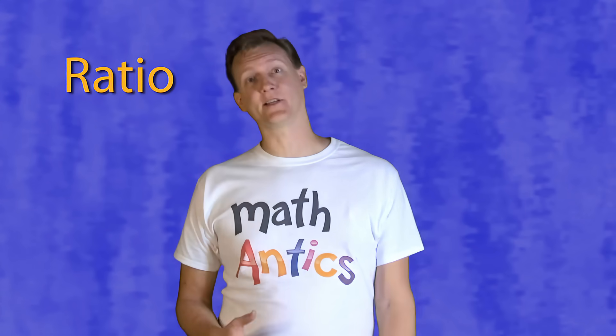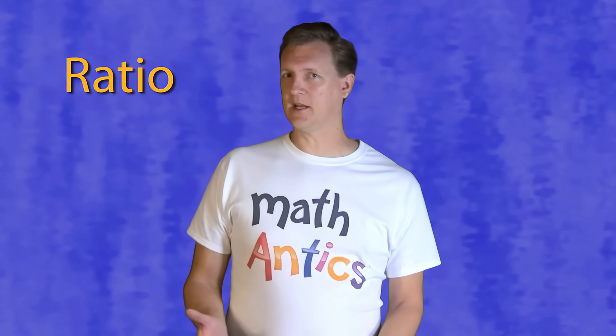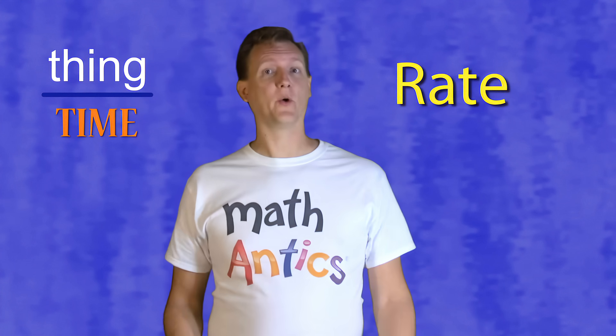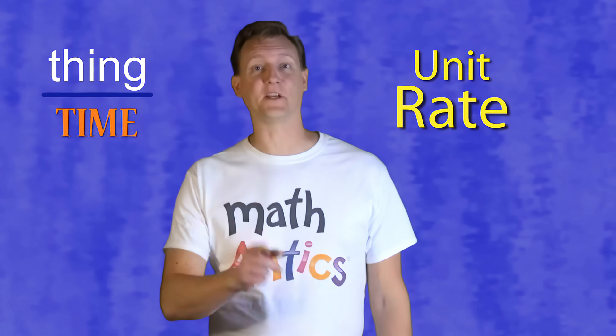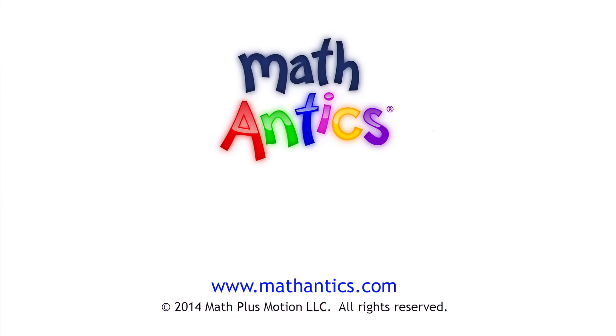That's it for this lesson. We've learned that a ratio is basically just like a fraction, but instead of showing what part of something you have, it shows the relationship between two different things. We also learned that when one of those two things is time, we call the ratio a rate. And last of all, we learned how to convert a rate into a unit rate for easy comparison. As always, thanks for watching Math Antics and I'll see you next time!